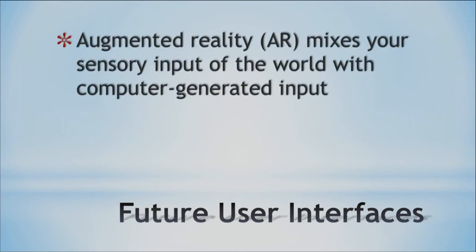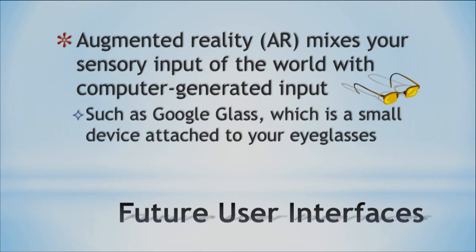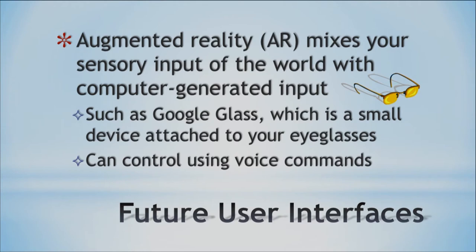Another technology is augmented reality: you take sensory input of the real world and combine it with computer-generated input. One example is Google Glass, a device attached to your eyeglasses that you control with voice commands. You might look a little weird sitting on a park bench talking to yourself while searching the internet, but it's not too different from people with cell phone earpieces. On that note, we'll call it a day for this section of ICS 100 — check y'all a little later. Alrighty.